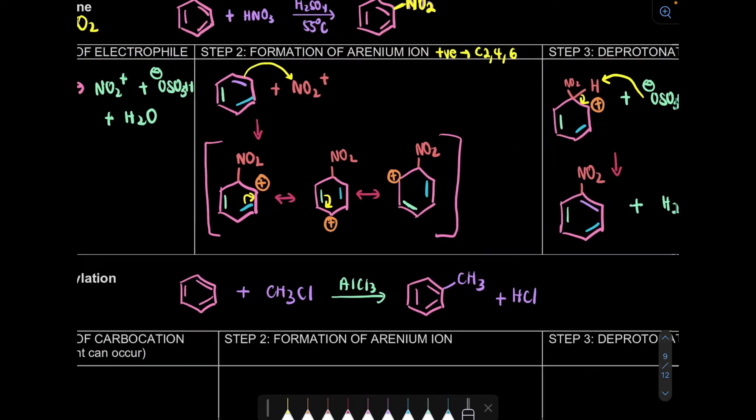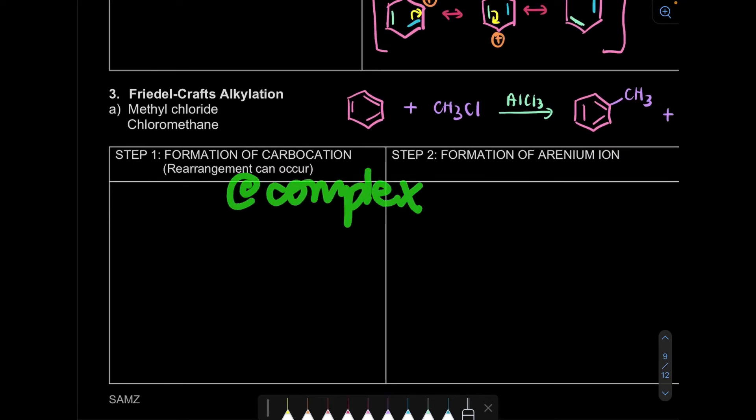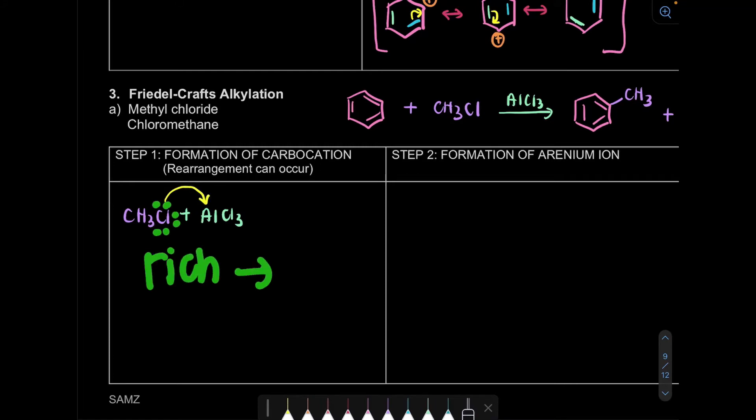So the first step is we're going to form carbocation or our complex. So we're going to react CH3Cl with AlCl3. What happened is from the rich electron, I can attack to the poor electron. Aluminium is poor. And then what we're going to form is CH3Cl attached to AlCl3. Since chlorine donated, it will have positive charge. Aluminium accepts the negative charge. So that's my first step.